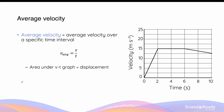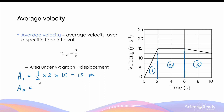We can also calculate total displacement from the area under a velocity-time graph, since that area represents displacement. Dividing the graph into three sections: the first part is a triangle with area = ½ × base × height = ½ × 2 × 15 = 15 meters. The second part is a rectangle with area = length × width = 15 × 4 = 60 meters.